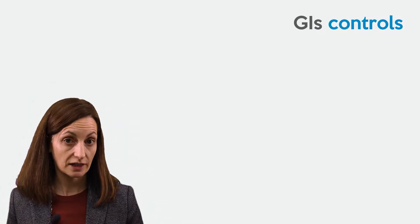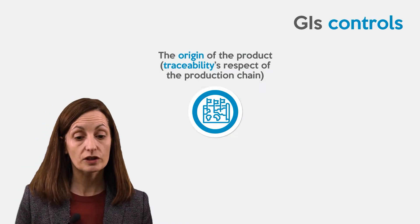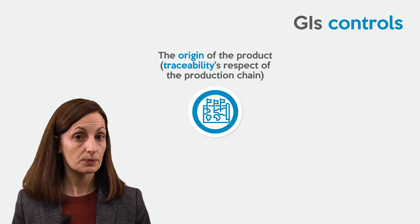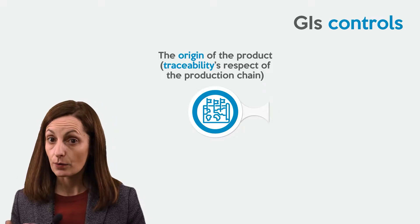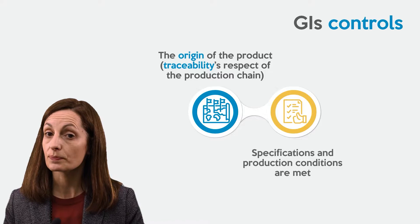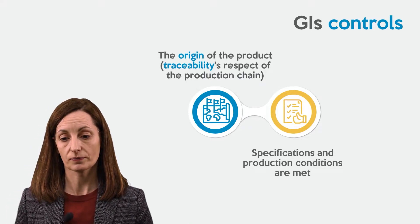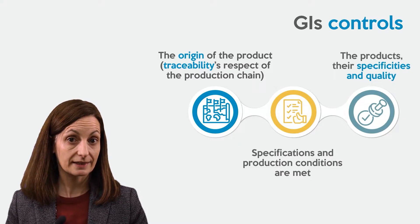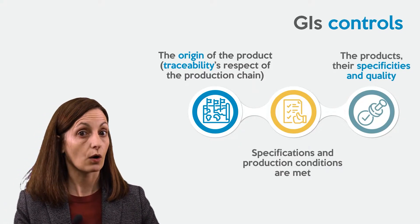The GI controls rely on different aspects. First of all, they rely on the origin of the product — meaning the traceability and the respect of the production chain. They also rely on the respect of the specifications and the production conditions. Additionally, there is a guarantee on the product and its specificities, characteristics, or quality.